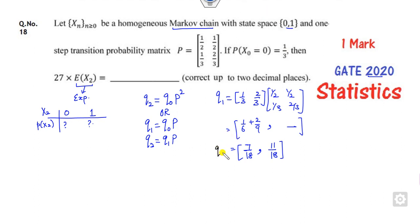Now this is my K1. Now you can find the value of K2. Similarly, from here, this is 7 by 18, 11 by 18. This is my K1 of half, 1 by 3, 2 by 3 and 1 by 2.